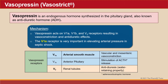Vasopressin is an endogenous hormone synthesized in the pituitary gland, also known as antidiuretic hormone or ADH. Its trade name is Vasostrict. Vasopressin acts on V1A, V1B, and V2 receptors, resulting in vasoconstriction and antidiuretic effects. The V1A receptor is very important in elevating arterial pressure in septic shock. The V2 receptors are located in renal tubules and when activated, result in antidiuresis or water-retaining properties.